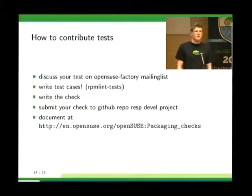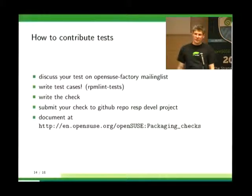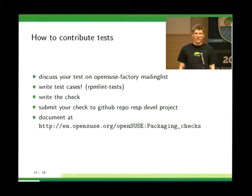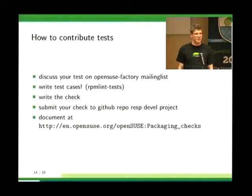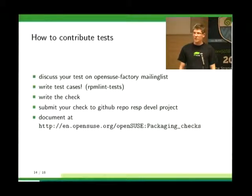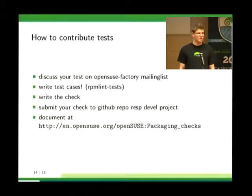How do you contribute? First, talk to the factory mailing list because other people might have other opinions about what's bad. Then write minimal spec files showing the bad thing and probably the good thing, and contribute them to RPM-Lint tests so we can verify your check works. Write the actual check and submit it to our GitHub repo — we would then integrate it into the package and submit it to factory. Don't forget to document the check, because that's where packagers go if they have questions and what Google finds.